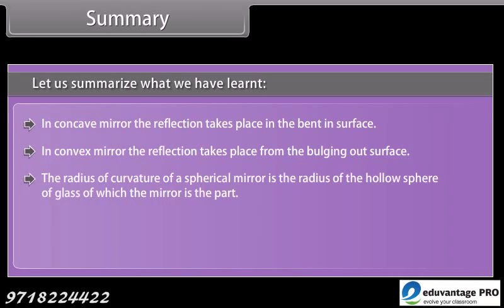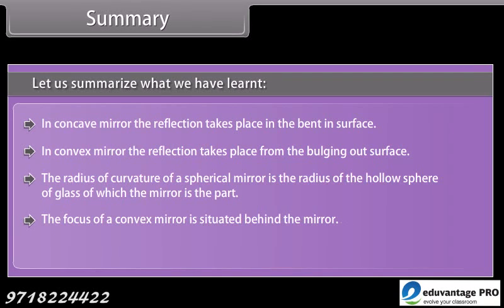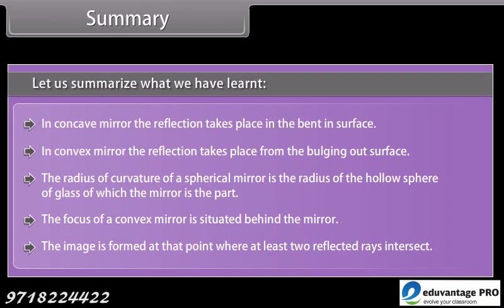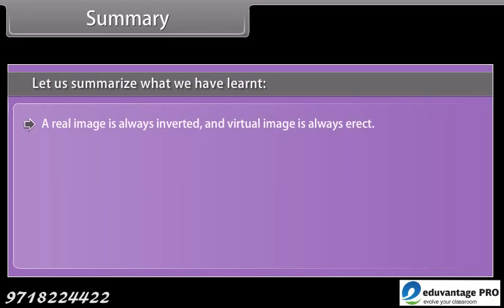The radius of curvature of a spherical mirror is the radius of the hollow sphere of glass of which the mirror is a part. The focus of a convex mirror is situated behind the mirror. The image is formed at that point where at least two reflected rays intersect.